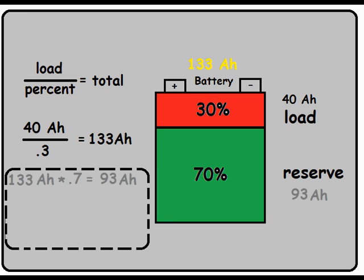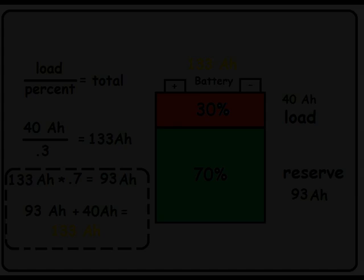You always want to check your work, so our battery reserve amp hours will be the total battery, 133 amp hours times 70%. We have 93 amp hours. Adding your reserve 93 amp hours to your original 40 amp hour load does indeed give us a 133 amp hour battery. I think we've done the mathematics to death on that one. Let's move on.